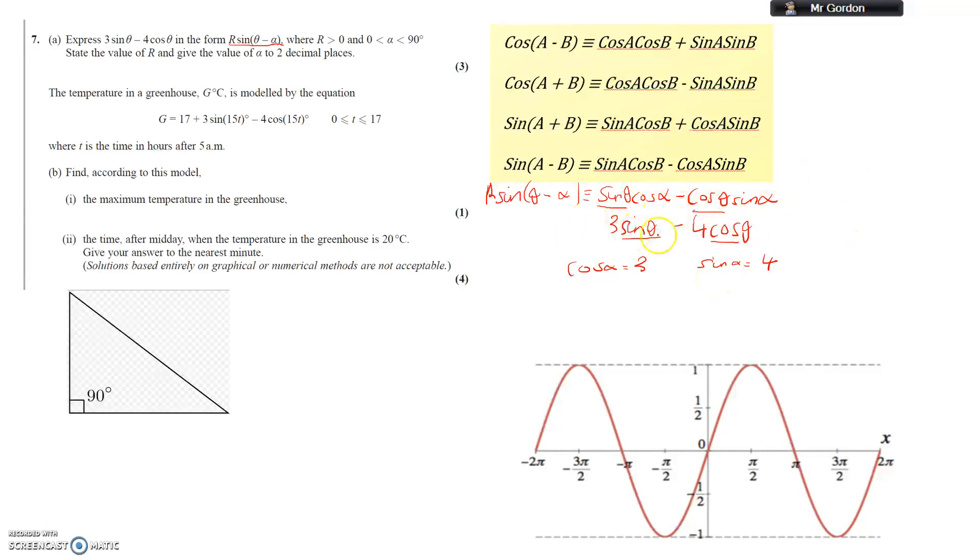Now what you can do is you can think about this in a right-angle triangle situation now to make it more obvious what we are doing. If you pop in an angle of alpha, then we know that sine alpha is going to equal this side here. So this is the 4. The cos part is the 3. R is going to be the hypotenuse.